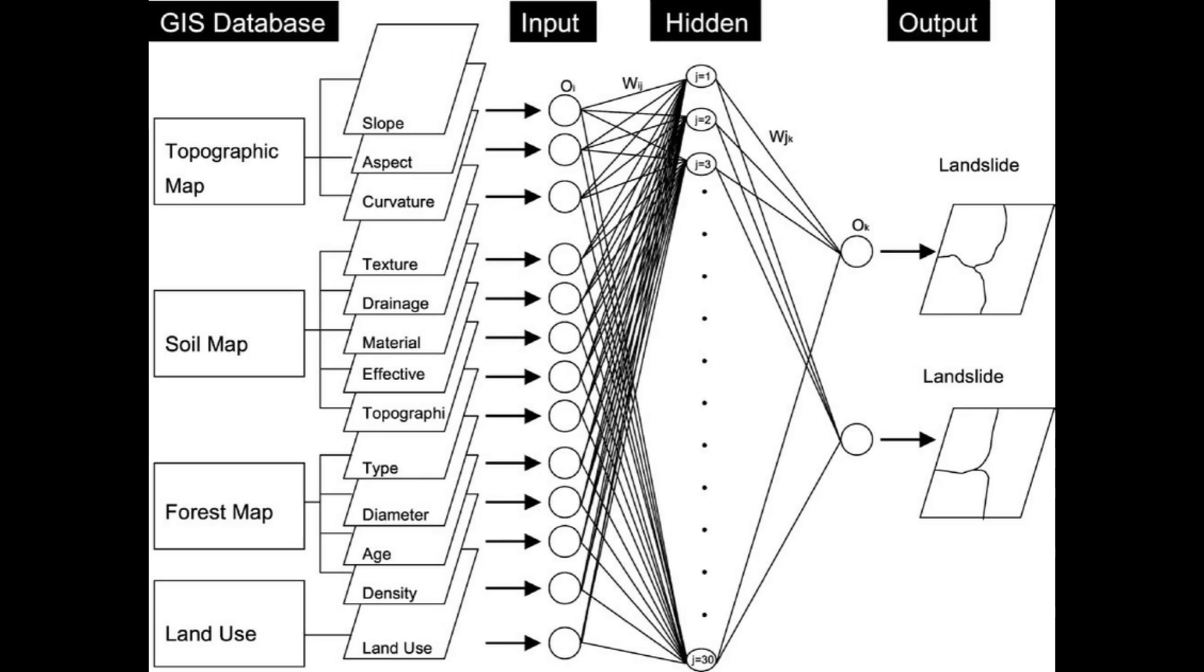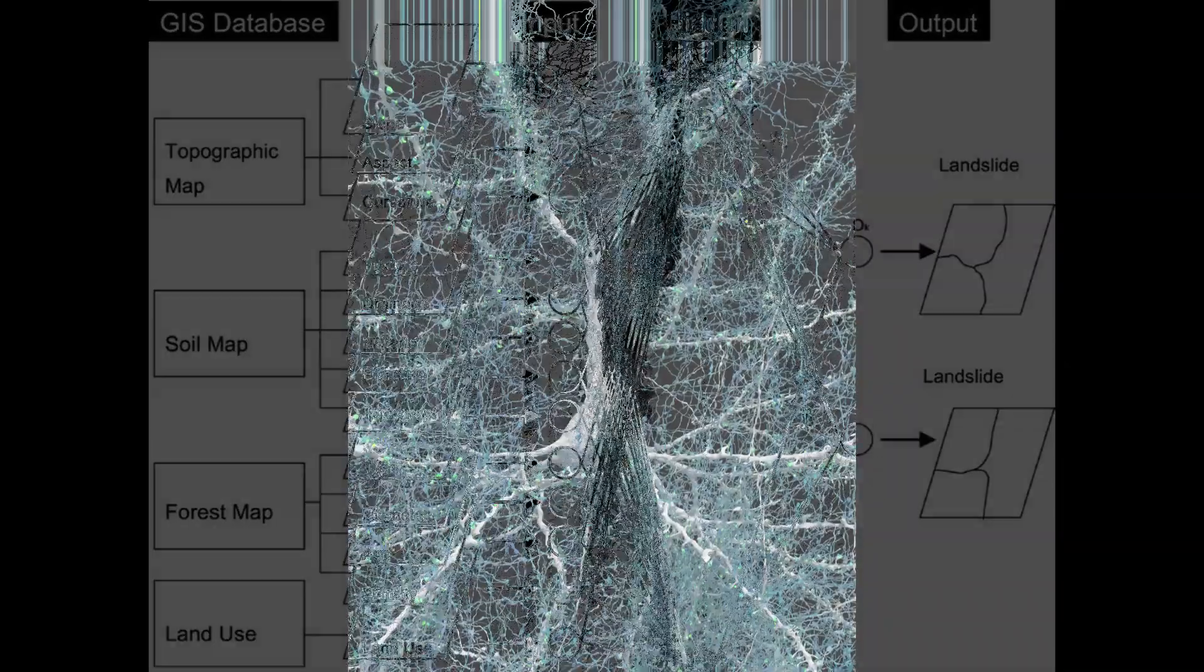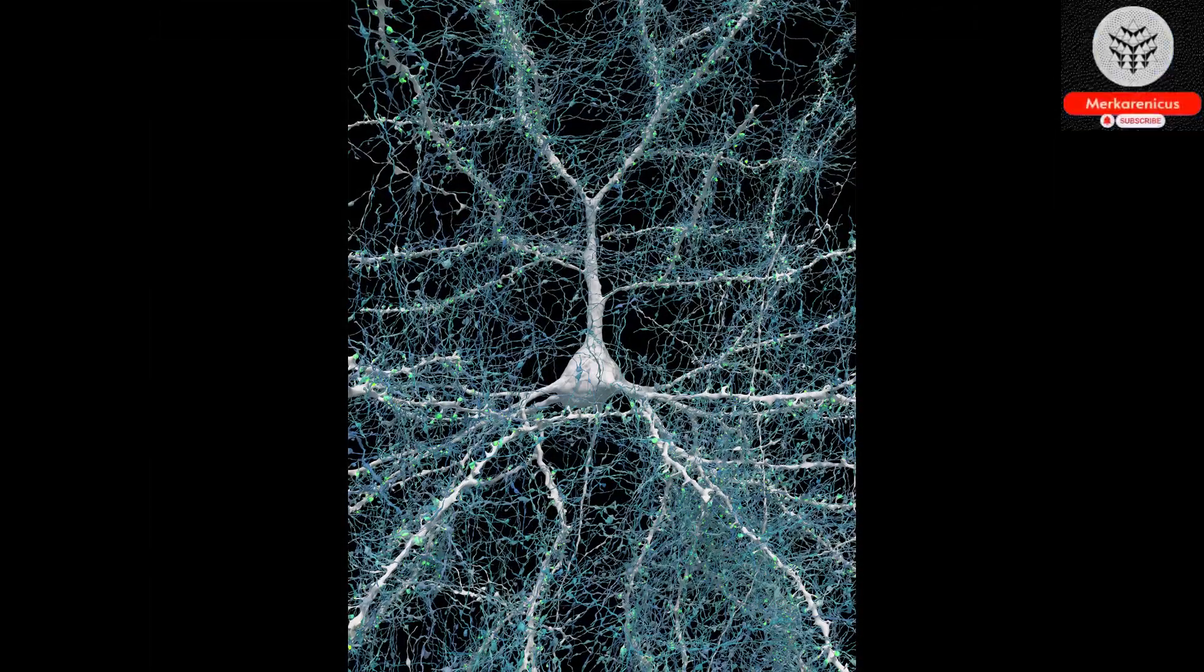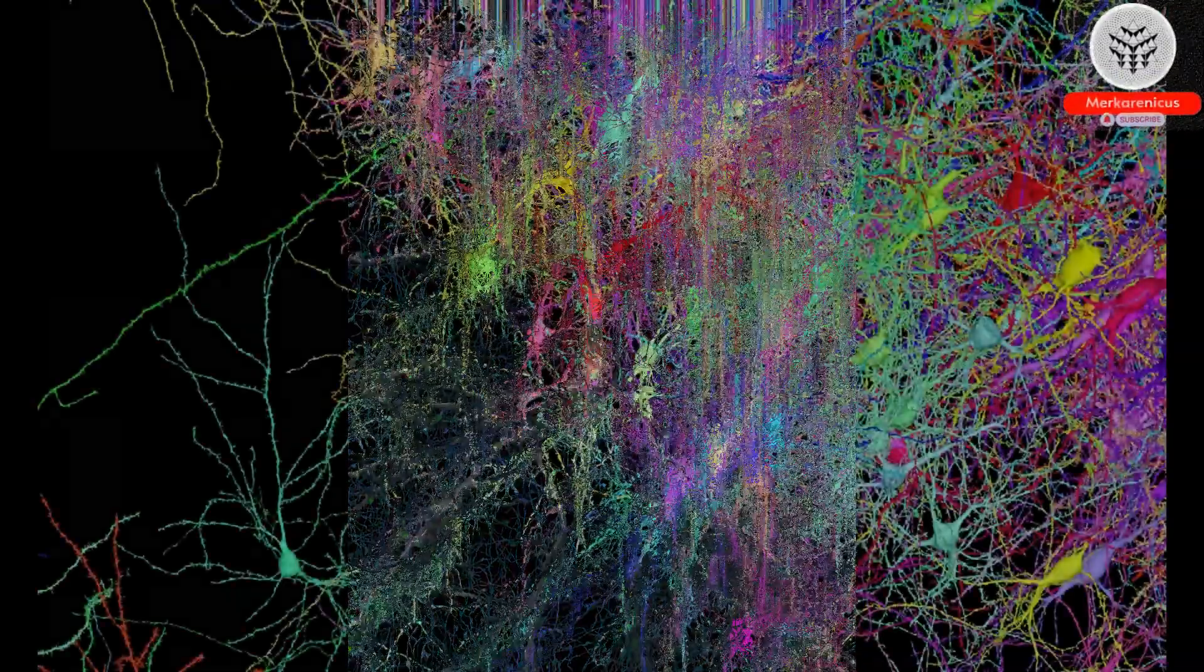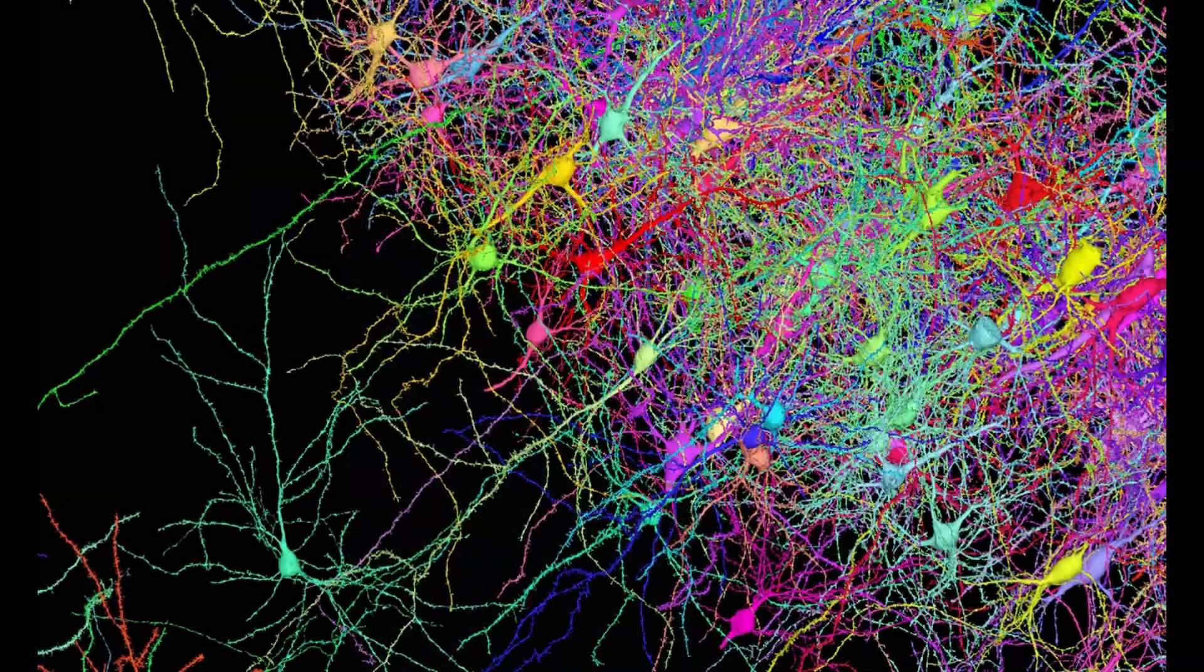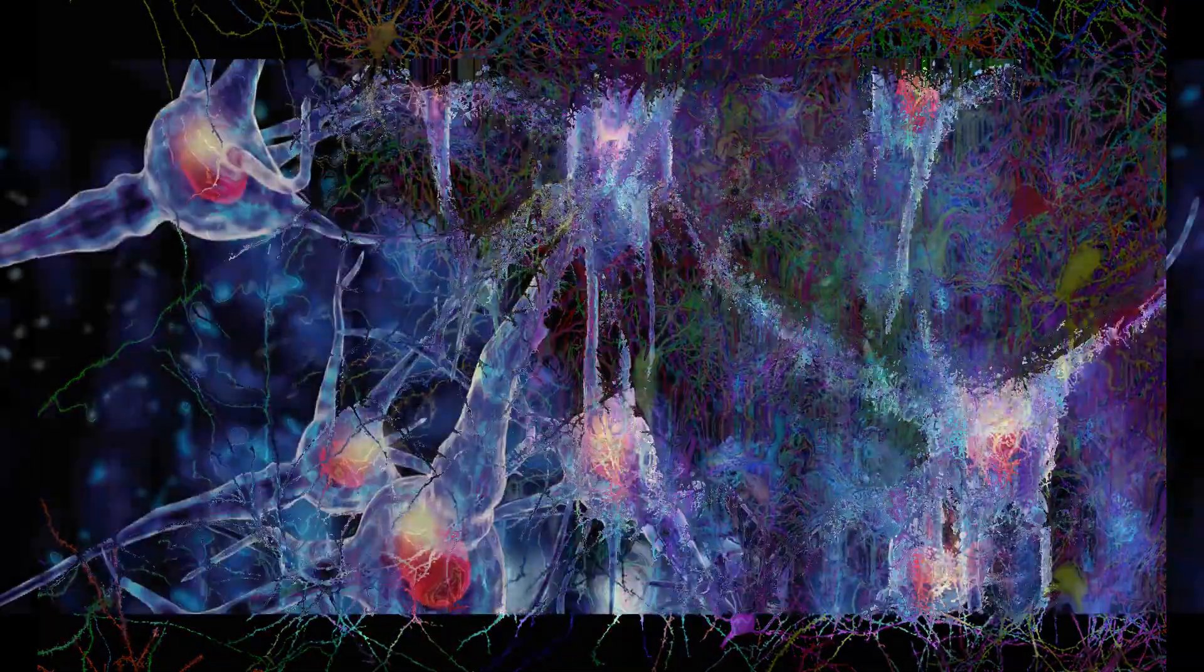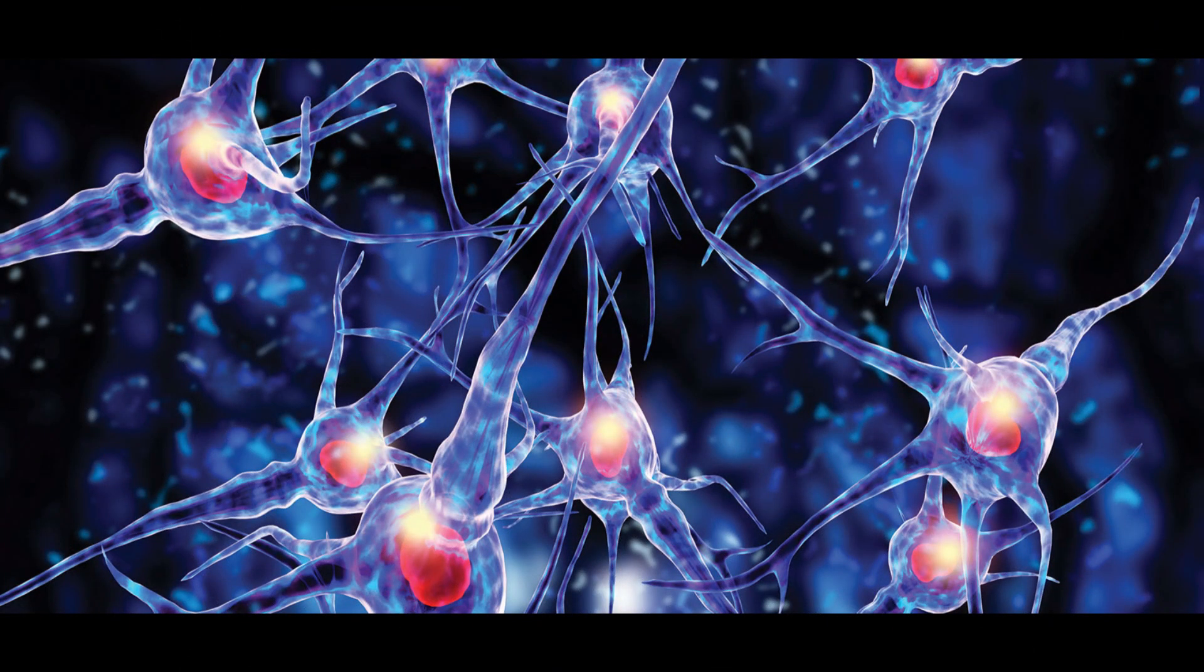Without further ado, let us delve into our discussion. Beneath the microscope's gaze, a silicon chip studded with 4,096 microscopic portals whispers secrets of the brain's labyrinthine networks.